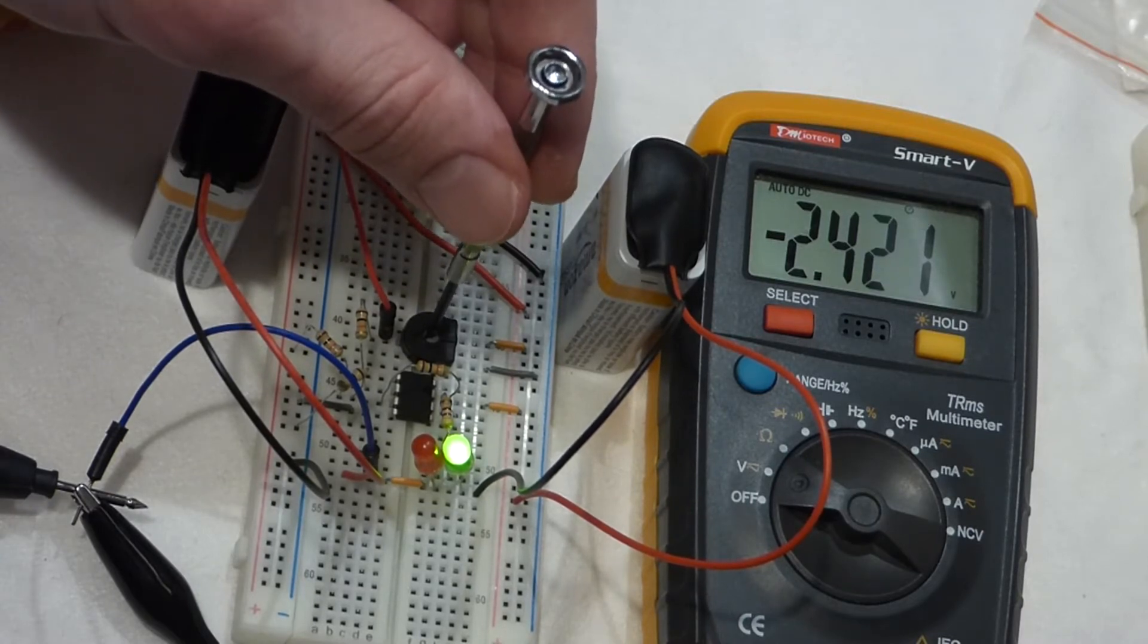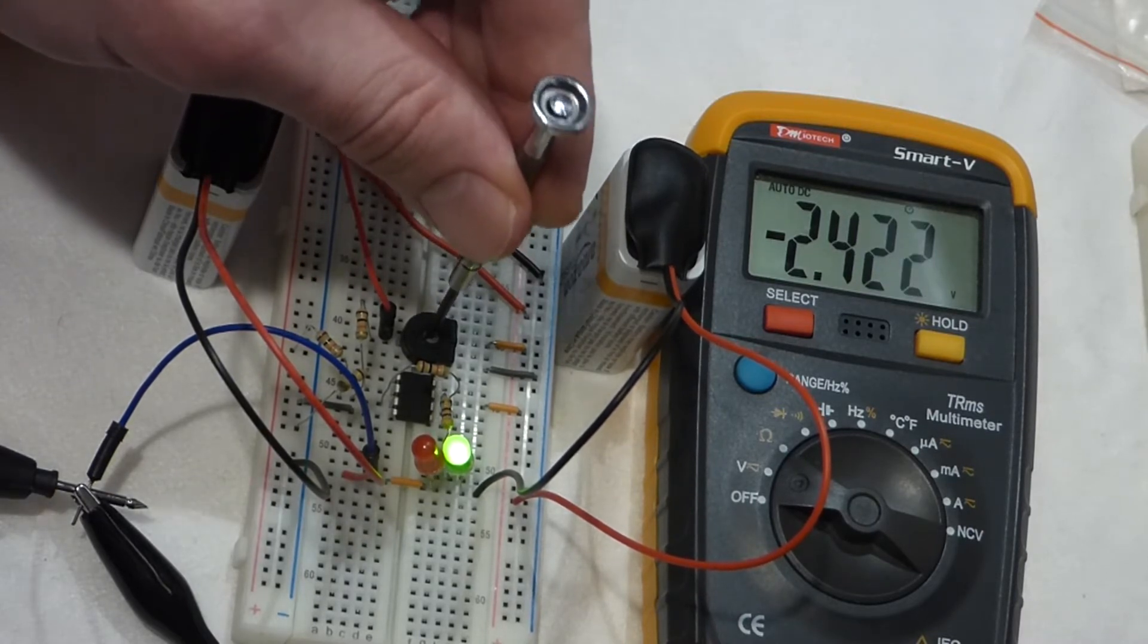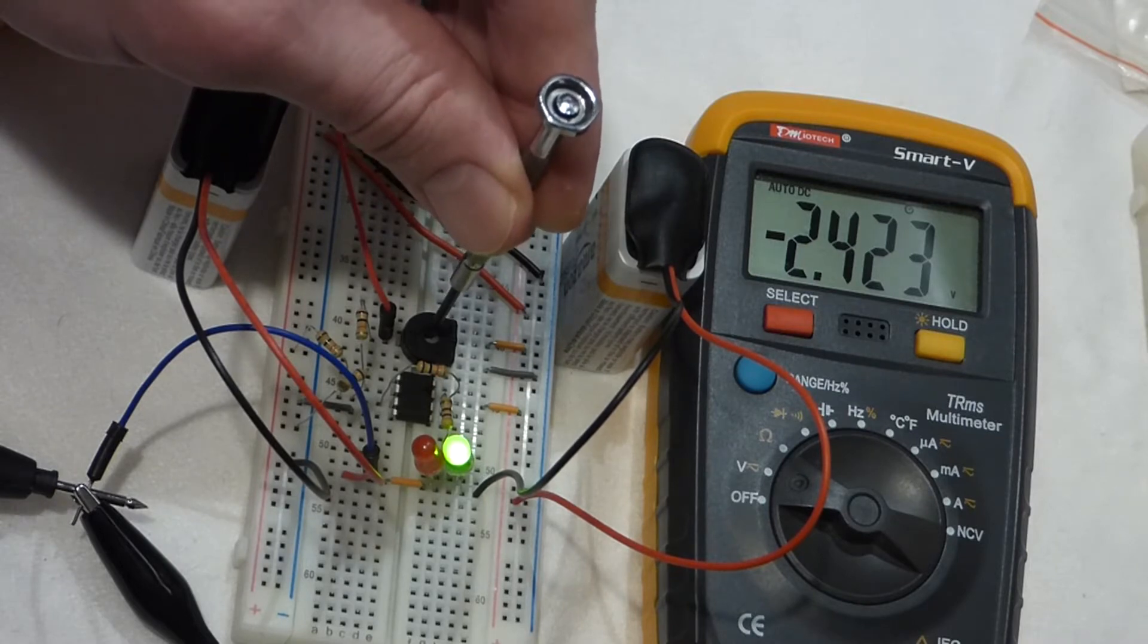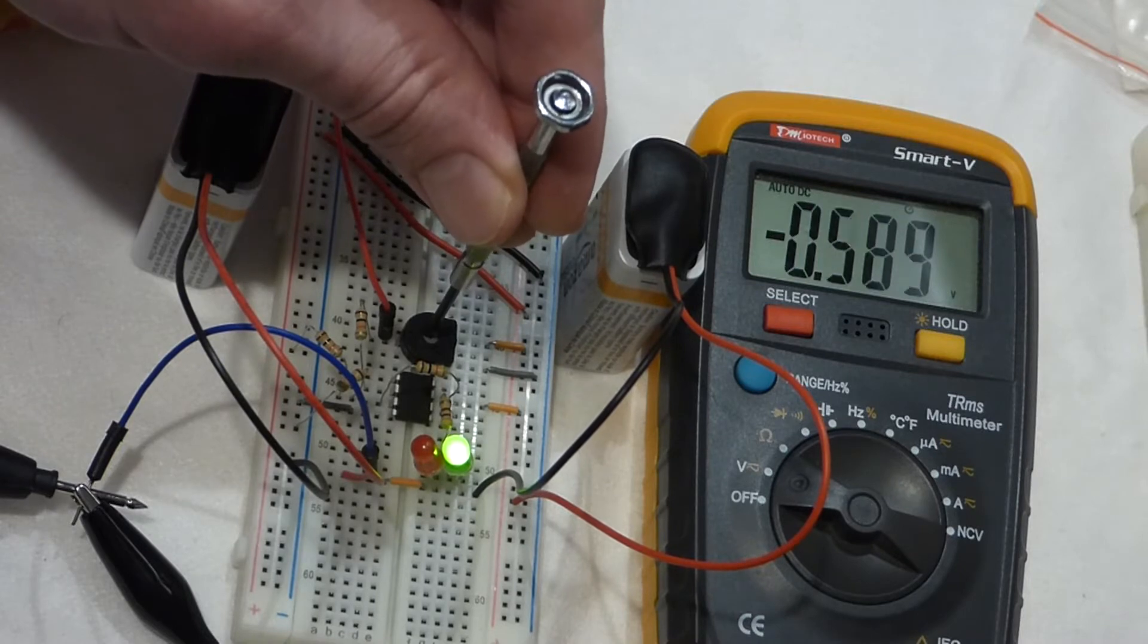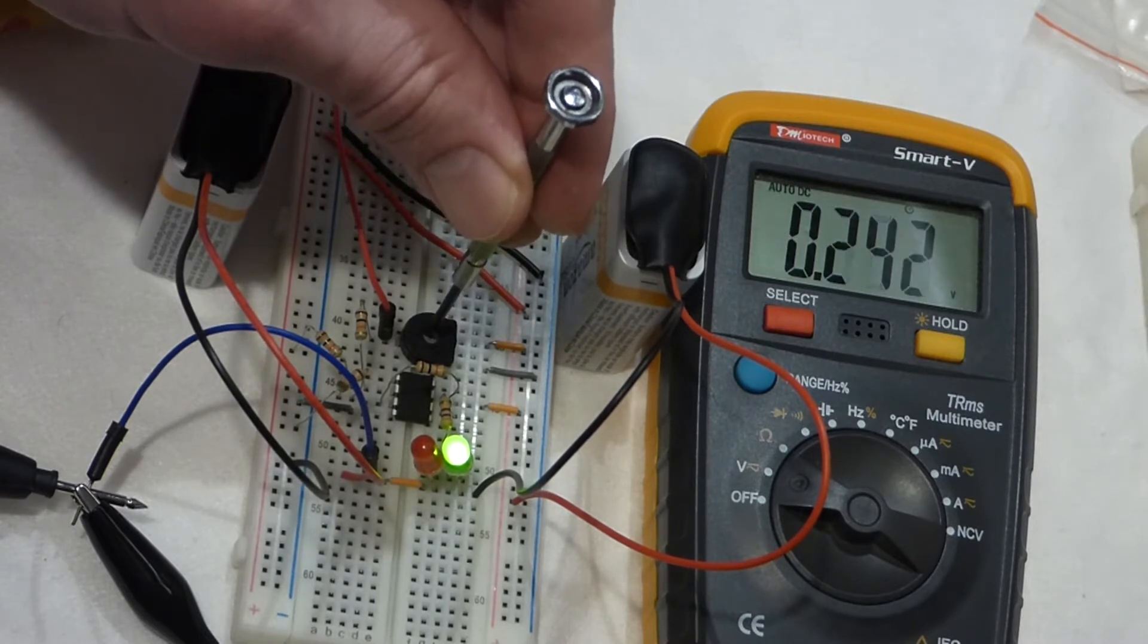Now we're going to go the other way. So when the voltage is negative in this circuit, the green LED is on.